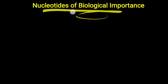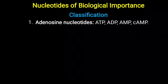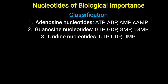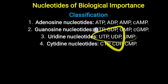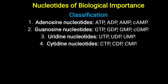Biologically important nucleotides include: from adenosine — ATP, ADP, AMP, and cyclic AMP; from guanosine — GTP, GDP, GMP, and cyclic GMP; from uridine — UTP, UDP, and UMP; from cytidine — CTP, CDP, and CMP. These nucleotides have many important roles in molecular biology that will be discussed in another video. At present, you have to understand how nucleotides are formed and what the important aspects of nucleotides are.